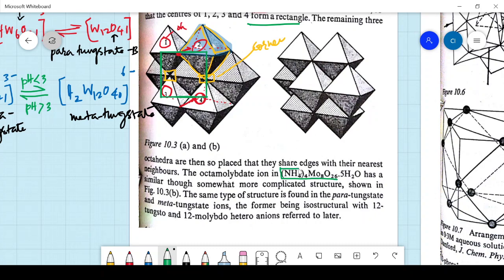So the only thing is you have an extra octahedron here like this. And they are just disposed here. Rather than this octahedron coming here, it is just sharing the edge there. 1 and 3 are sharing edges, rather than corner.